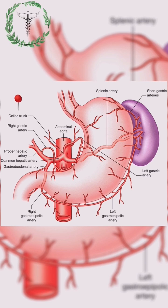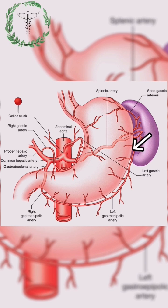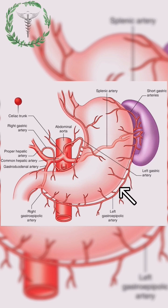Secondly, we've got the splenic artery, which is the largest branch, and is further divided into the short gastric arteries, which supply the fundus. It has also got the left gastroepiploic artery, which supplies the upper part of the greater curvature.